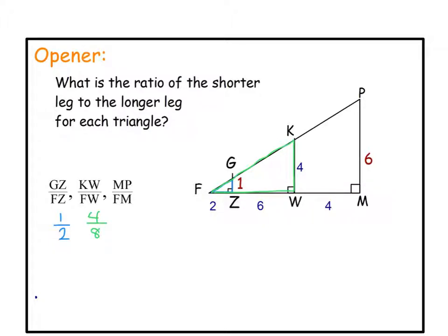And then let's take this other larger right triangle and the shorter leg over this longer leg here. So that would give me 6 over 12.